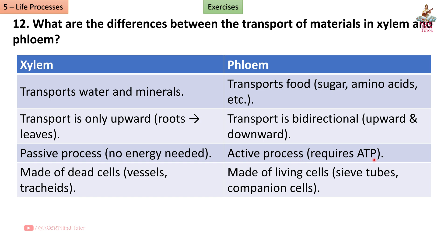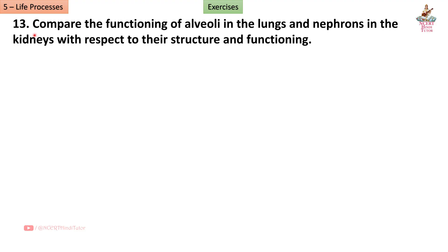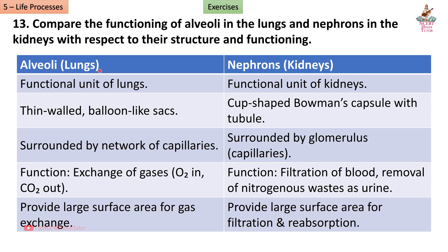Xylem is made of dead cells — vessels and tracheids. Phloem is made of living cells — sieve tubes and companion cells. Question 13: Compare the functioning of alveoli in the lungs and nephrons in the kidneys. Answer: Alveoli are the functional unit of lungs; nephrons are the functional unit of kidneys. Alveoli are thin-walled, balloon-like sacs surrounded by a network of capillaries. Nephrons have a cup-shaped Bowman's capsule with a tubule, surrounded by glomerulus capillaries.